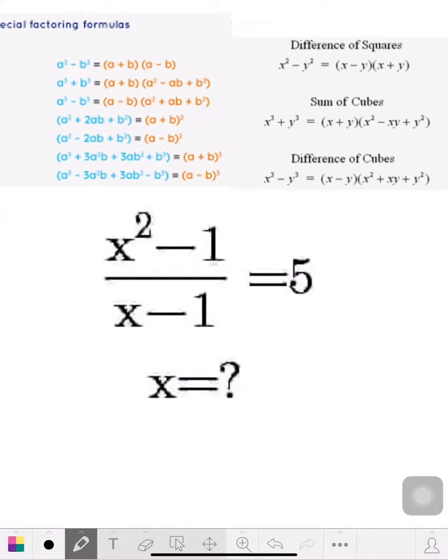Hello class, Mr. Stone here. The problem we have today is x squared minus 1 over x minus 1 equals 5.